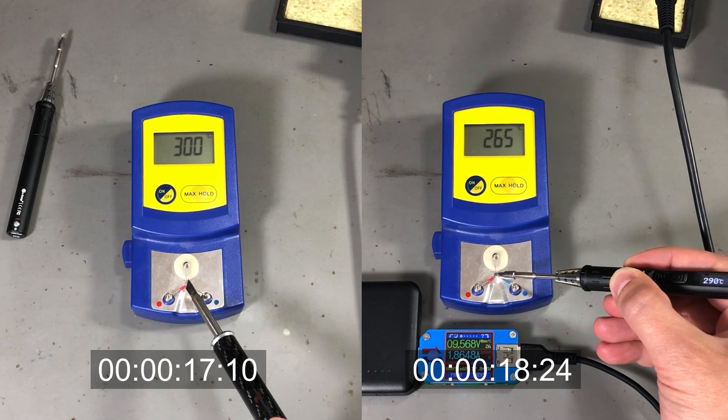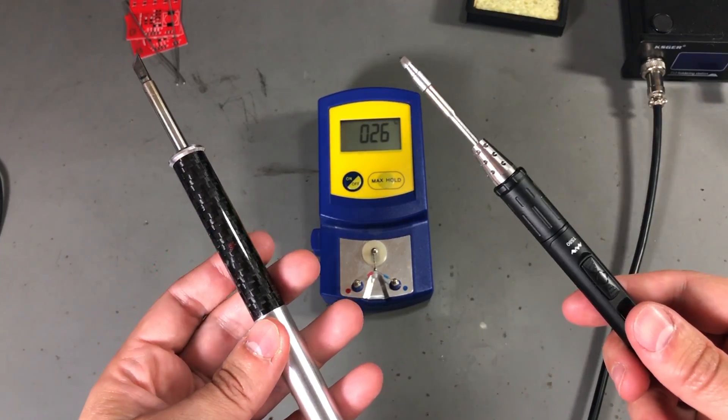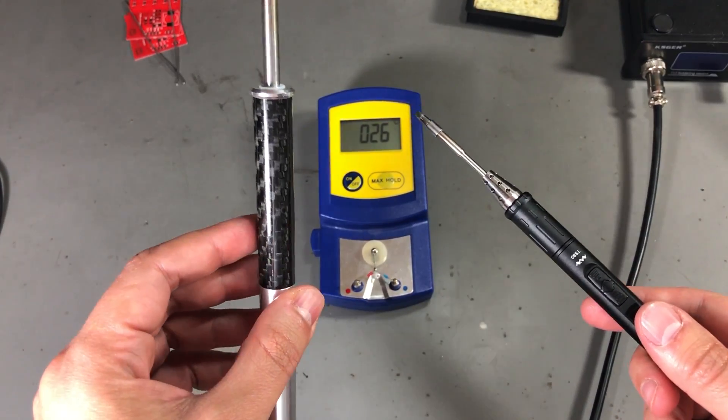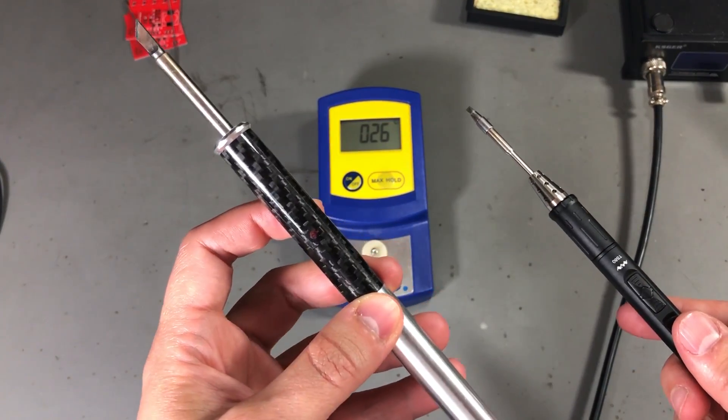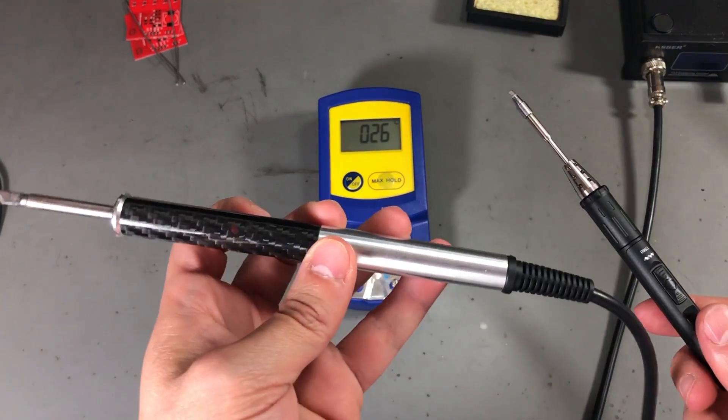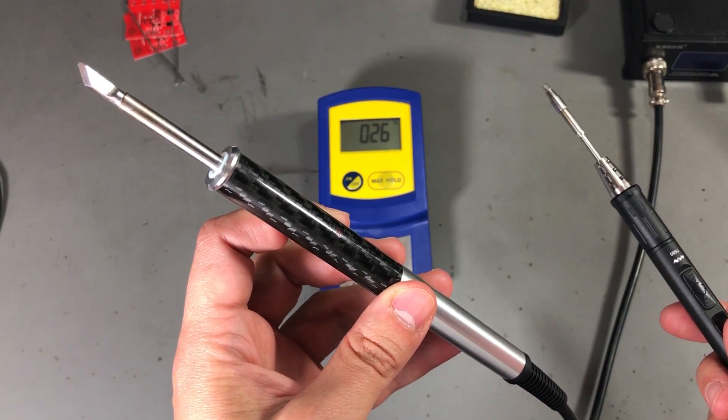So the Kaysger T12 did it in 17 seconds, while the TS80 did it in 23 seconds. It's not a huge difference, but the superior power rating of the T12 tips has spoken and the Kaysger T12 station has won this round.